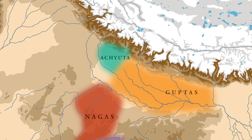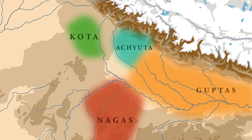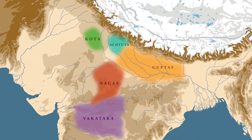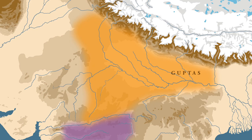Apart from the Nagas, Samudragupta also conquered two other powers. The first was Achyut, who according to most scholars ruled the territory of the Ahichatra region, which is modern Bareilly. The second ruler Samudragupta conquered was a Kota prince. This Kota was not the modern Kota of Rajasthan; during this period the Kotas were a family who ruled the region of present-day Delhi and Haryana. These three powers were the main ones Samudragupta conquered in the first phase of his conquest of Aryavarta.